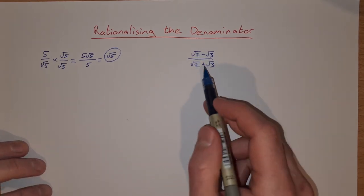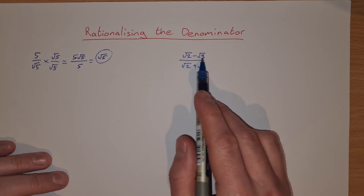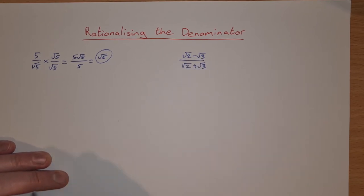This next one then has a little bit more to it. So we have root 2 minus root 3 over root 2 plus root 3.